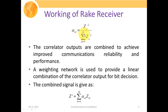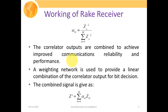The value of alpha_M always lies between 0 and 1, and an important relationship holds: alpha 1 + alpha 2 + alpha 3 + ... + alpha M = 1. This normalization is important because we need to evaluate the actual signal Z in order to determine the transmitted symbol. The correlator outputs are combined to achieve improved communication reliability and performance by taking a weighted average of all multipath components — those with larger SNR contribute more to the final signal.